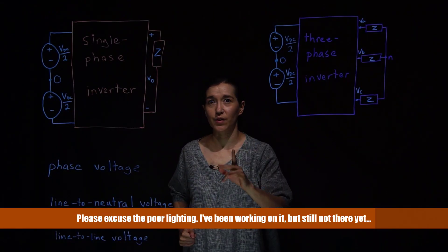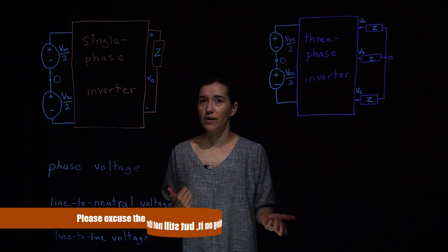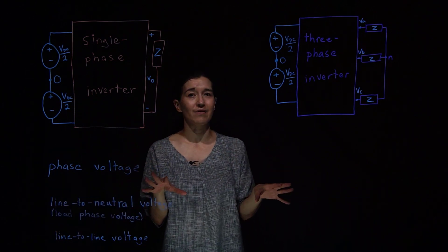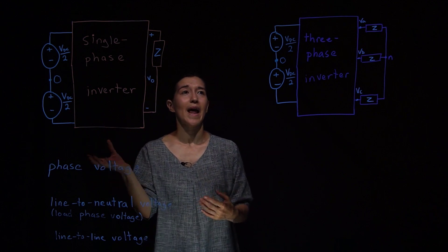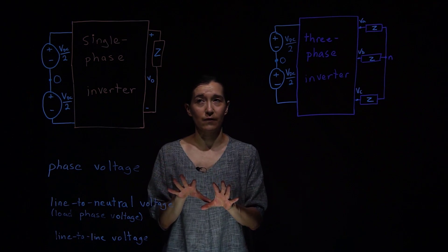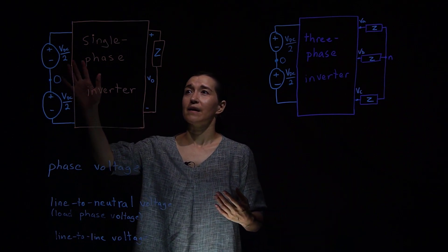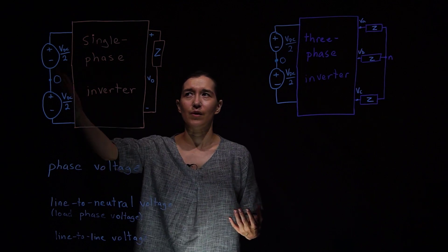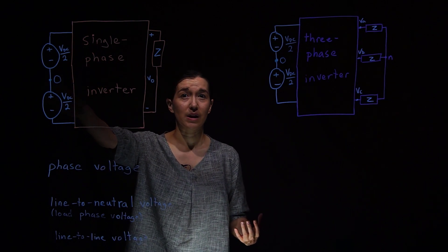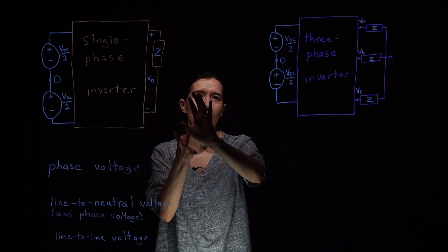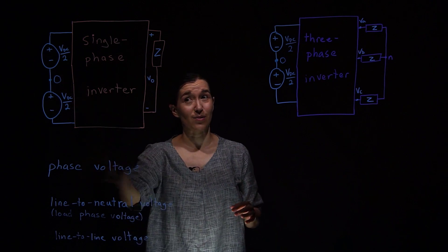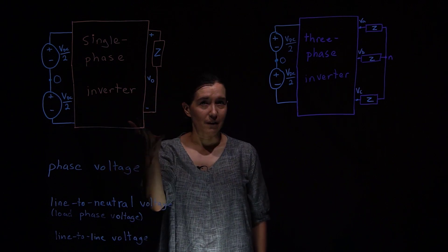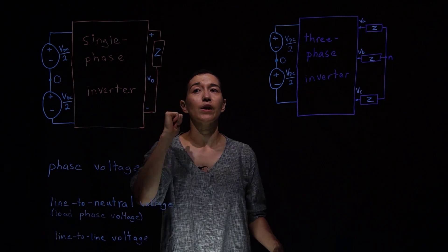In this video we are talking about the different types of phases for inverters. We are working with voltage source inverters. There are two main breakdowns: a single phase inverter and a three-phase inverter. We also discuss some voltage definitions. The single phase inverter takes a DC input — with VDC divided by two on each side and ground in the middle — and creates one phase of AC at the output, with one load generally connected between two points.